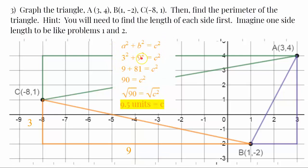3 squared is 9, 9 squared is 81, the sum of 9 and 81 is 90, take the square root of both sides, the square root of 90 is 9.5 units, rounded to the nearest tenth.